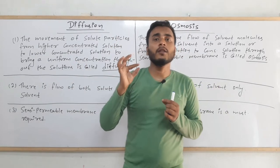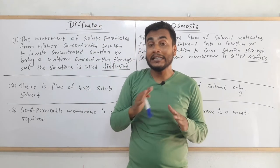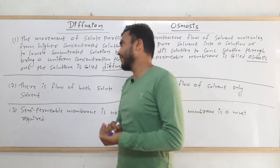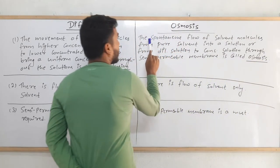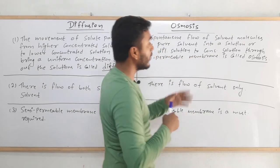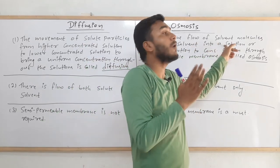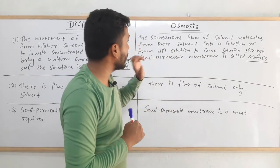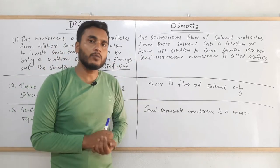In diffusion, the solute particles flow from higher concentrated solution to lower concentrated solution until the concentration of both solutions becomes the same. On the right side, the definition of osmosis is the spontaneous flow of solvent molecules from pure solvent — where there are no solute particles — into a solution, or from dilute solution to concentrated solution through a semi-permeable membrane. That is the definition of osmosis.